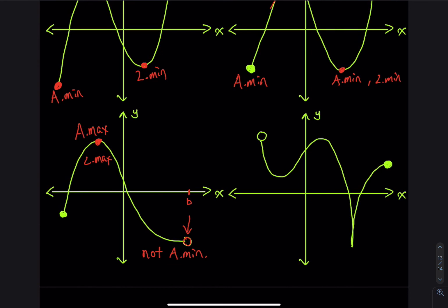On the last graph, this point looks like the highest y, but it is not an absolute max because it is an open circle. This point can only be called a local maximum. This other point will be the local minimum. And this point is the lowest y, so we call this the absolute minimum. Let's say this is x equals c — f prime at c is undefined, meaning the function is not differentiable at that point.